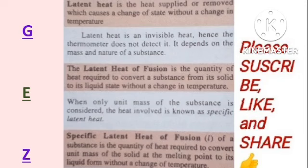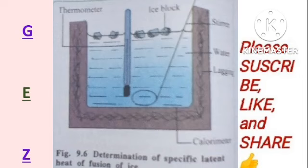Let's explore an experiment for determining the specific latent heat of fusion of ice. Even though this heat is hidden, we can still determine it. The specific latent heat of fusion is the heat required to convert a unit mass of solid to its liquid form — this is why it's called fusion.